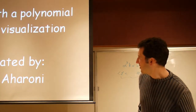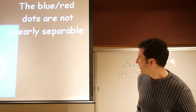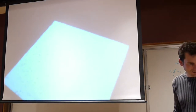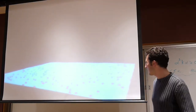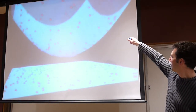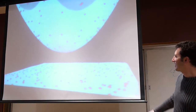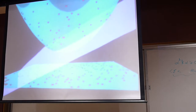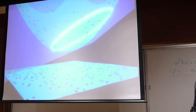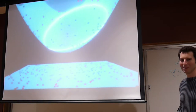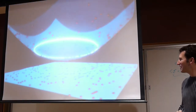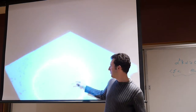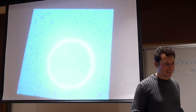Here's a visualization: a 3D animation showing red and blue dots that are not separable in 2D. The red dots get lifted up, and now you can find a nice separating hyperplane — which, projected back to two dimensions, gives a nonlinear decision boundary. That's exactly what the kernel trick achieves.